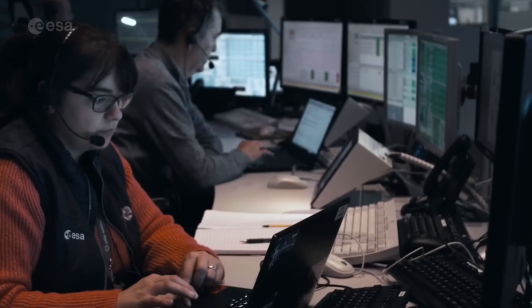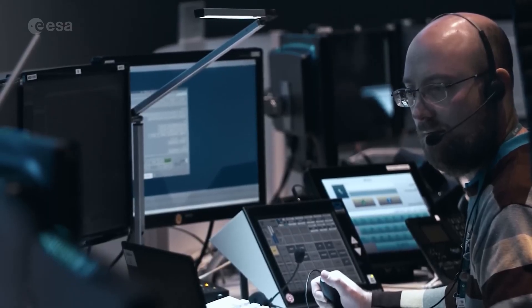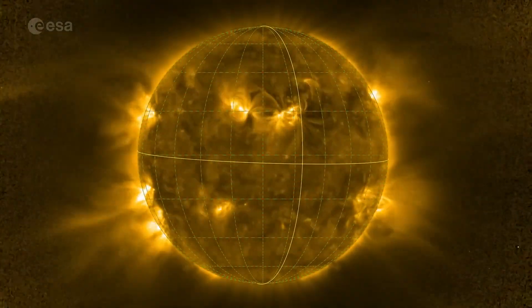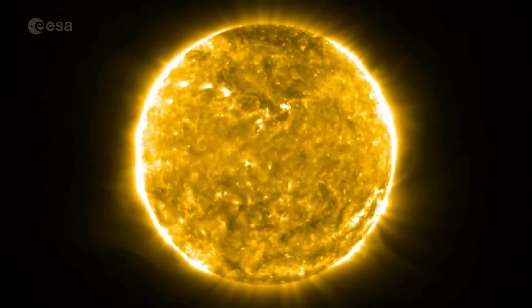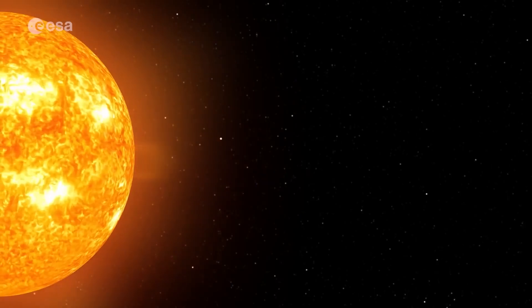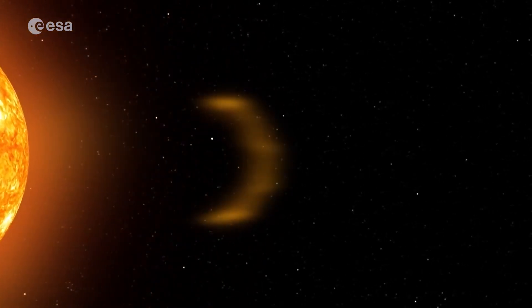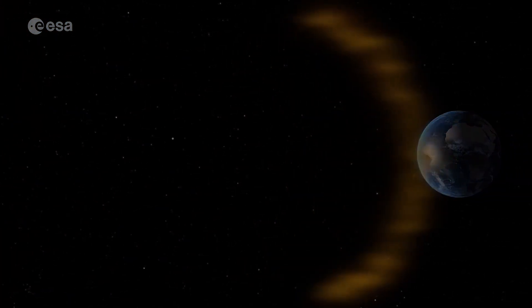Predictions on when it will reenter become more accurate with each passing day, a lot of which depends on solar activity. Solar flares and coronal mass ejections are speeding things up. Charged particles in space weather heat up Earth's atmosphere, causing denser air below to rise, increasing the drag of the atmosphere on Aeolus.